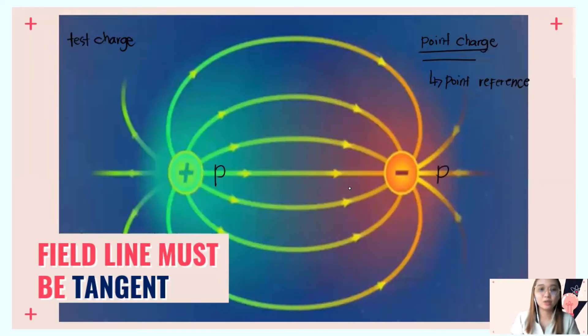Point charge can be denoted by big letter Q. How about test charge? Based on its name, 'test'—this charge is used to determine the charge of a point charge. For example, if you don't know if this is positive, you use a test charge.